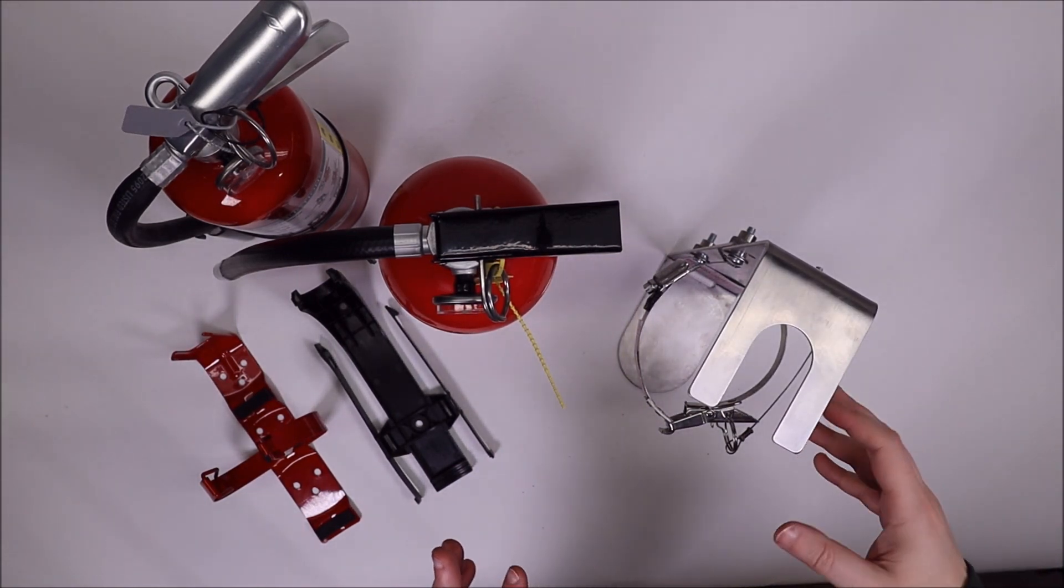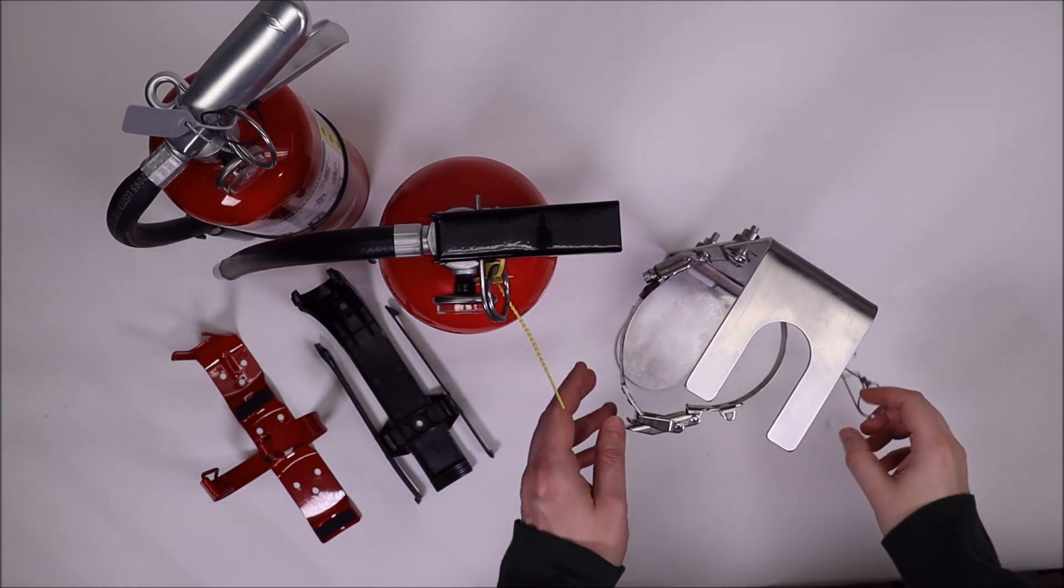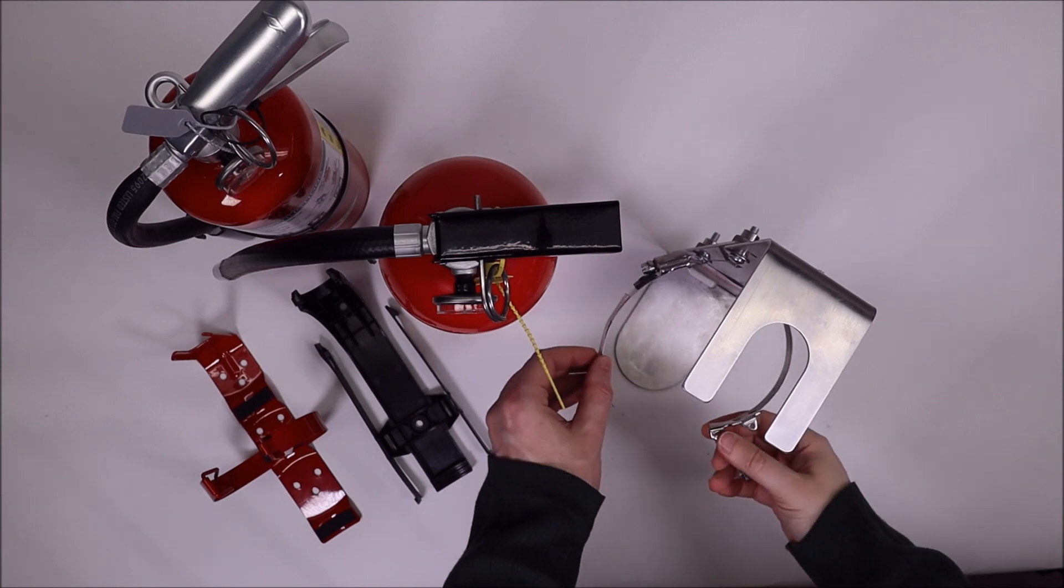Operation is really easy. I've got it adjusted for the Kidde right now, so I'll use that for the demonstration. But you simply remove the pin, open up the latch and the band clamp.